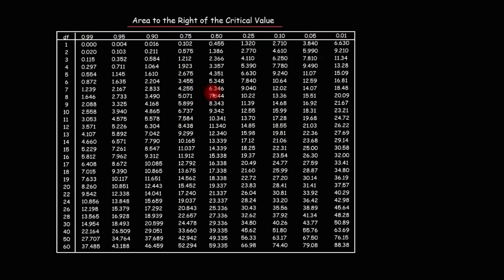So here we have our chi-square distribution table. And in the first column, we have the degrees of freedom. In the first row, we have the area to the right of the critical value. And as we said before, the area to the right of the critical value for a right-tailed test is alpha, which is 0.05.